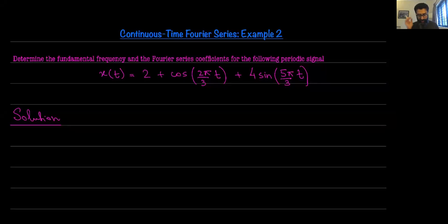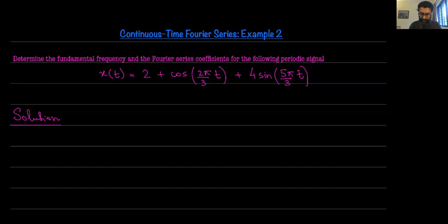Here is another example where we are required to determine the Fourier series coefficients for the given periodic signal. The first thing we need to do is determine the fundamental frequency for the signal as well. So that's the first thing we're going to do, and then we're going to follow it up with finding the Fourier series coefficients.